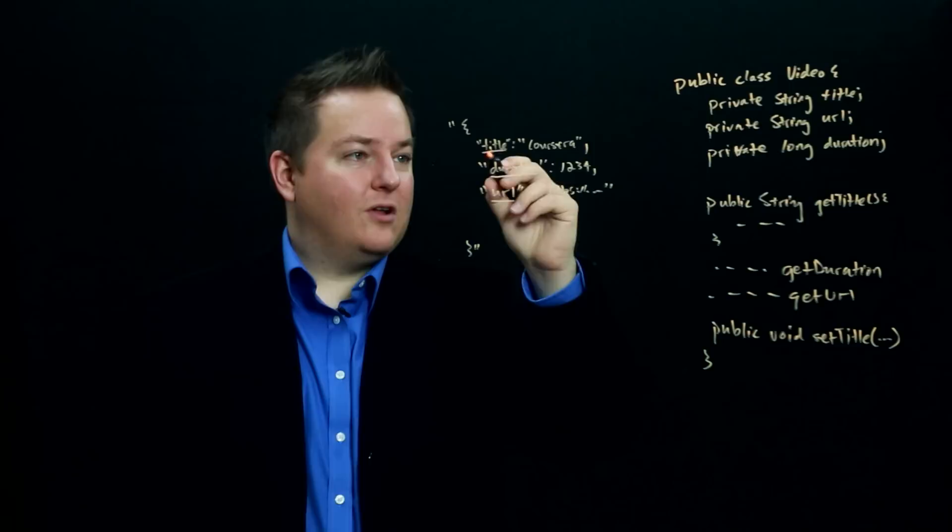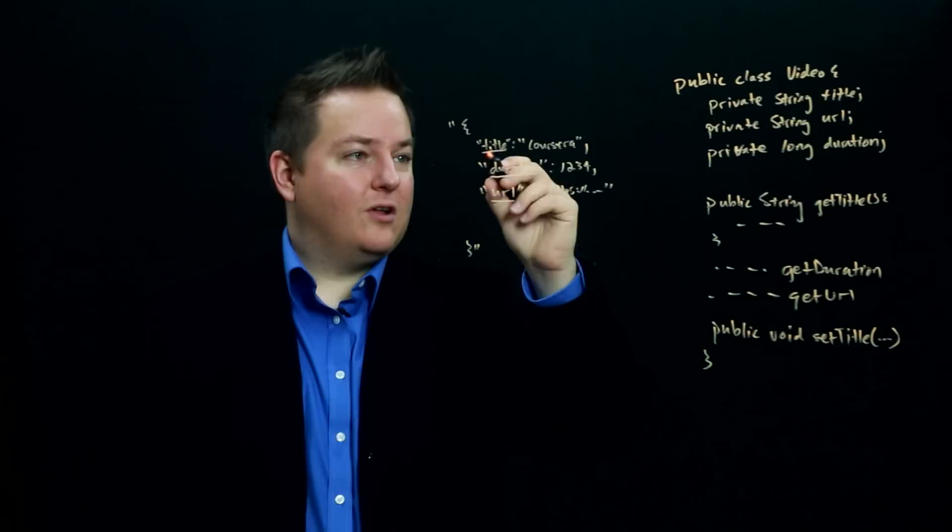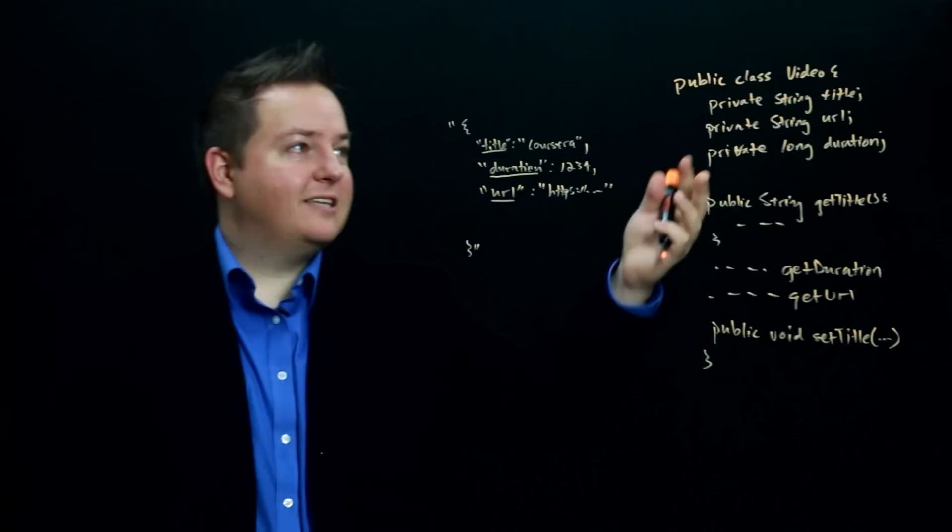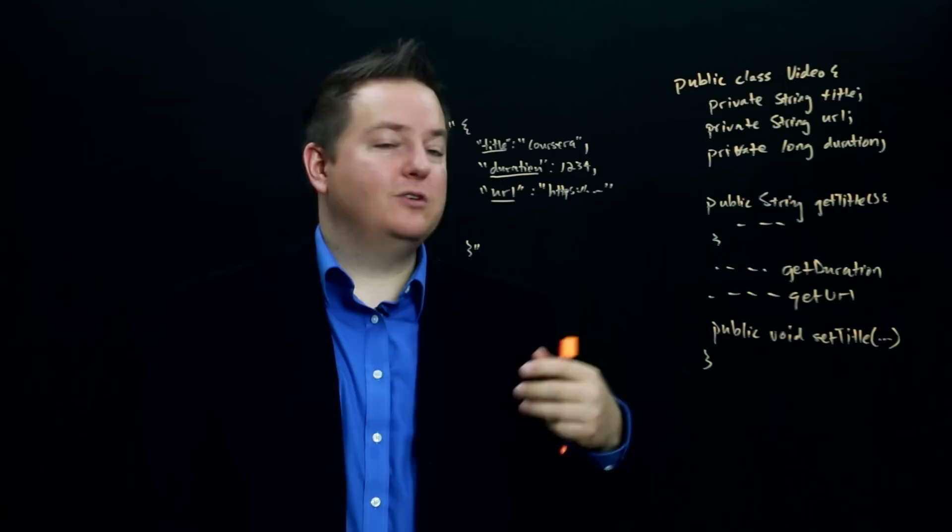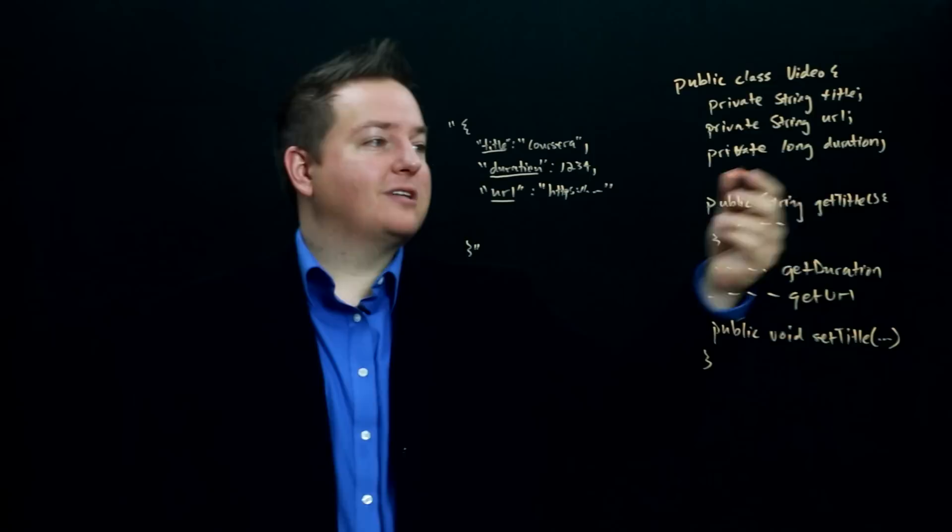So this will end up calling setTitle, it will call setDuration, it will call setURL and it will automatically convert the values. The other interesting thing about Jackson is let's say that video had an embedded reference to some other object. So let's say that there was a video type object.